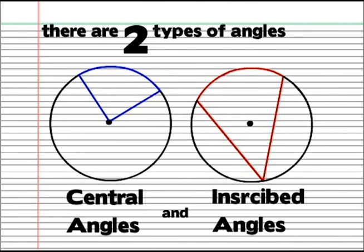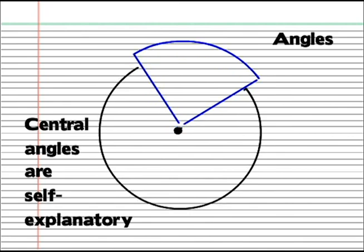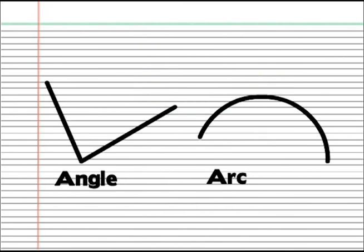Central angles and inscribed angles. Central angles are self-explanatory. Angles from the center point. The relationship with the arc is one-to-one. So the angle measurement equals the arc measurement.